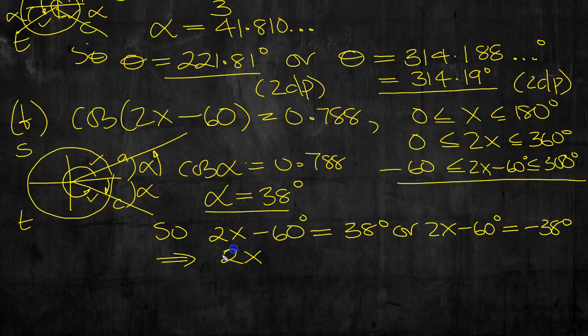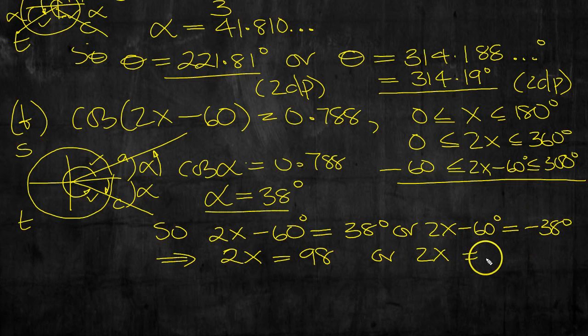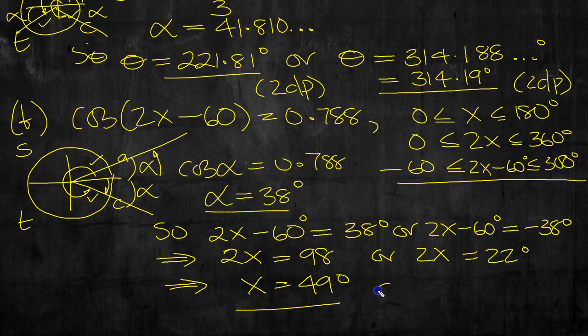2x move the 60 over is equal to 98 in this one. 60 take 38 is 22 degrees and now we can read off x. 49 degrees or x is equal to 22 over 2 is 11 degrees. So there's our two solutions for part B.